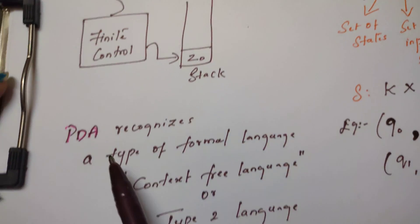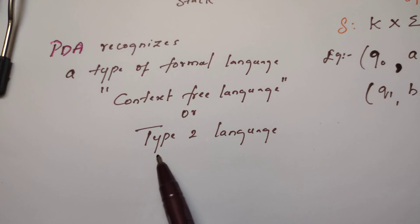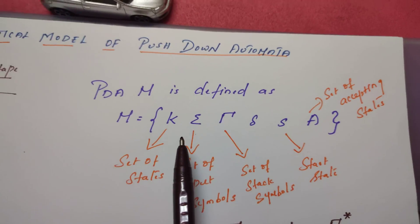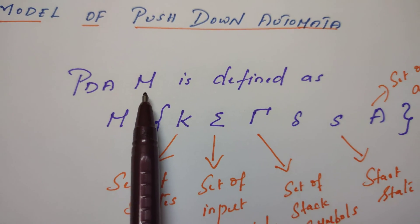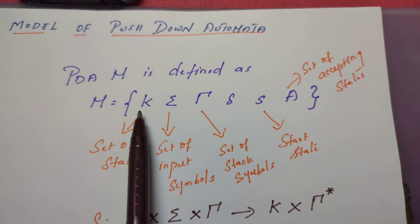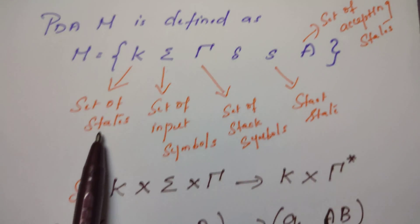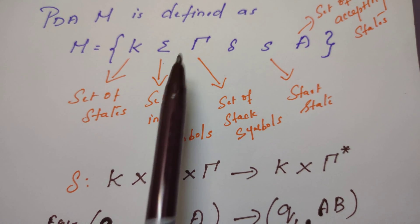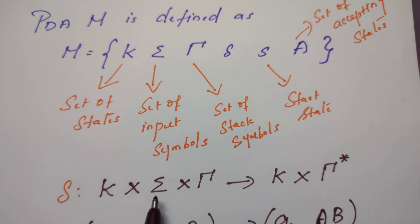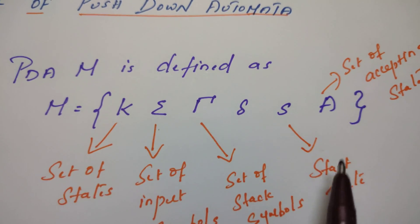PDA recognizes a type of formal language called context-free language, otherwise known as type 2 language. Now let us see the mathematical model of pushdown automata. PDA M is defined as a six-tuple: K, Σ, Γ, δ, s, A. K is a set of states, Σ is a set of input symbols, Γ is the set of stack symbols, δ is a transition function, s is the start state, and A is a set of accepting states.